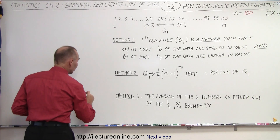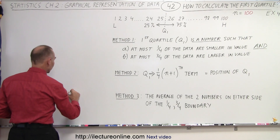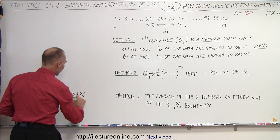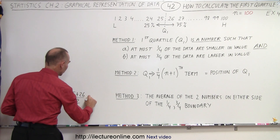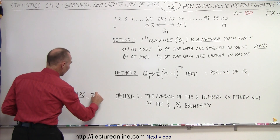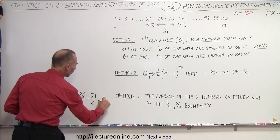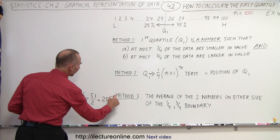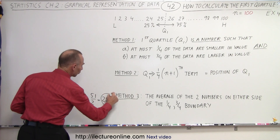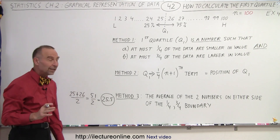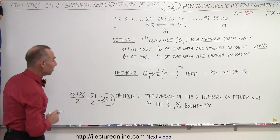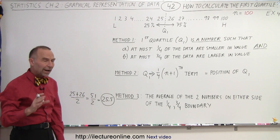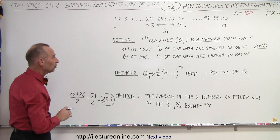So in this case, for method 3, it's going to be 25 plus 26 divided by 2, which is 51 divided by 2, which is 25.5. So the first quartile using method 3 would be 25.5.